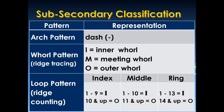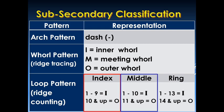However, if it is a loop pattern, we are going to use the ridge counting using this table. For the index finger, if the ridge count is 1 to 9, our sub-secondary classification will be I, which stands for inner. And for 10 and up ridge counting, we are going to use the letter O for outer. For the middle finger, 1 to 10 ridge count will be letter I for inner, and for 11 ridges and up, we are going to use letter O standing for outer.